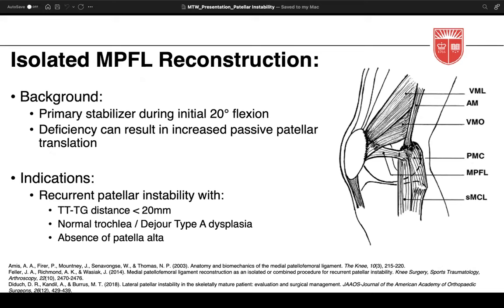The MPFL is the primary stabilizer during the initial 20 degrees of knee flexion, before the patella engages with the trochlear groove. It's often disrupted during dislocation events. Normally, passive translation of the patella is about half the width of the patella, but MPFL deficiency can result in increased passive patellar translation and increased risk of lateral patellar subluxation and instability. Indications for isolated MPFL reconstruction: recurrent instability with essentially normal bony architecture.